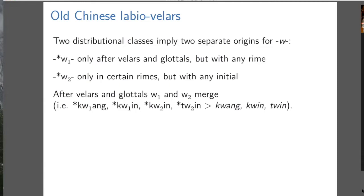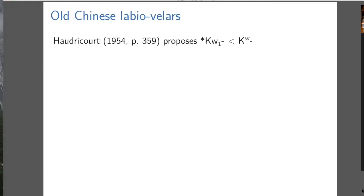You might notice that these statements of W1 and W2 are the mirror image of the distributions I was talking about between initials and rhymes. That's because in some contexts we can't distinguish the two — after velars and glottals, W1 and W2 merged. Audrey Core was the first person who then said W1 seems to have this special relationship with velar initials — so maybe it's from labiovelar consonants.